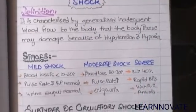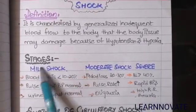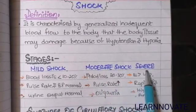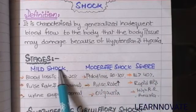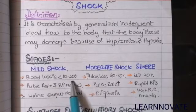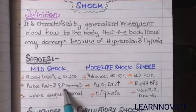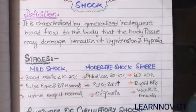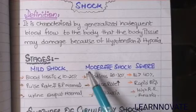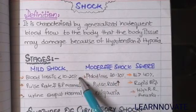The stages of circulatory shock include three stages: mild, moderate, and severe. In mild circulatory shock, the blood loss is less than 10 to 20 percent. The pulse rate and blood pressure remain normal, and urine output is normal because blood loss is minimal and does not significantly affect body function.